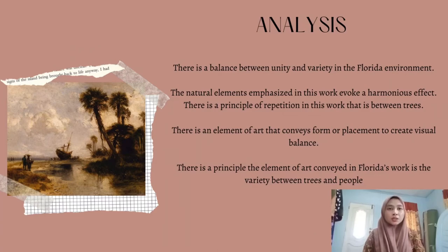There is a balance between unity, variety, and the environment. This balance found in the artwork is that the trees, ocean, and sky are part of the same ecosystem. When these natural elements are joined, they form a harmonious world. There is also a principle of repetition in this artwork between the trees — for example, in the placement of dark green and light green.